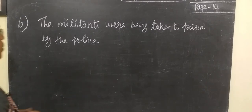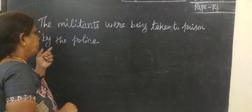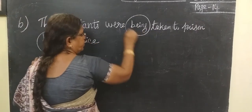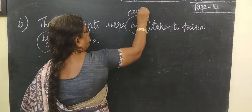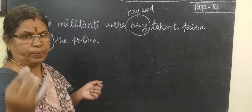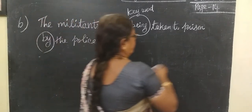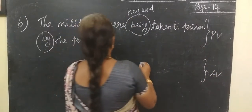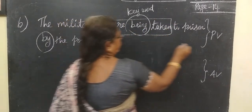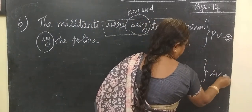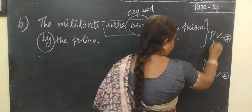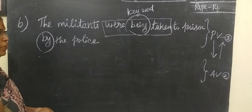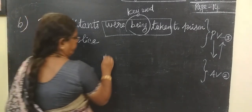The next sentence: 'The militants were being taken to prison by the police.' The keyword — what is given, active or passive? What is given is passive voice, and what is asked of you is active voice. In passive voice, there are three verbs — 'were being taken.' In converting passive to active, the number of verbs is reduced. Active to passive increases; passive to active reduces.